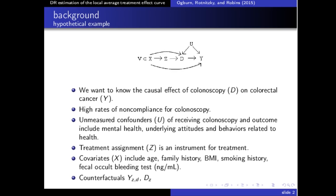Let me set the stage for the work I'm going to talk about today by way of a quick hypothetical example. Suppose we're interested in the effect of colonoscopy — that's the treatment variable D — on colorectal cancer, the outcome. We can't assess this effect using standard methods because there are high rates of noncompliance, and noncompliance could introduce unmeasured confounding for the effect of treatment on the outcome, by unmeasured confounders denoted by U in this diagram.